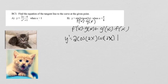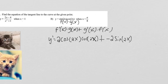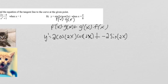Then by the chain rule, we take the derivative of the inside, which makes us multiply by 2. So all of that is just f′(x). Now we multiply by g(x), which is cosine 2x. Then g′(x): the derivative of cosine is negative sine times 2x, so we multiply that whole thing by 2, giving us negative 2 sine of 2x. That represents the derivative of g, and we multiply by f(x), which is sine of 2x.